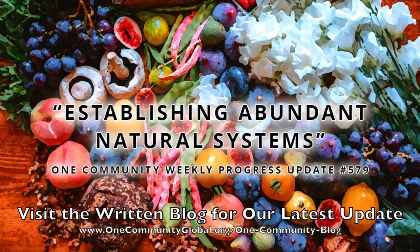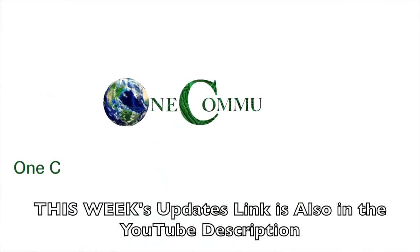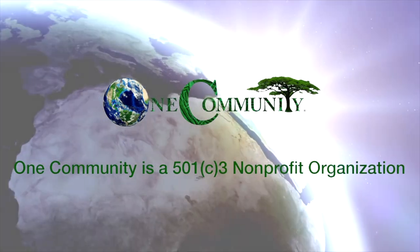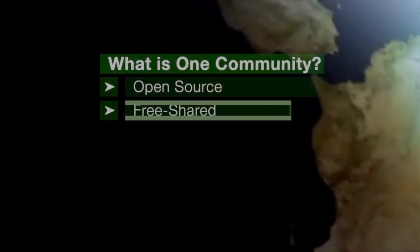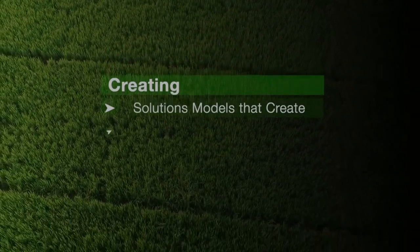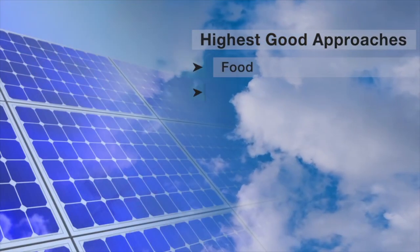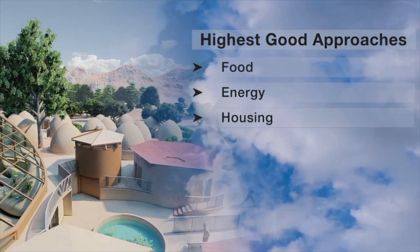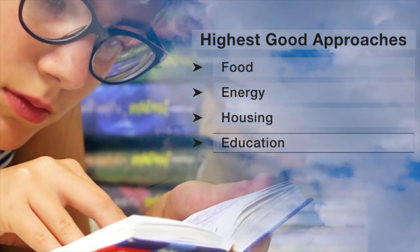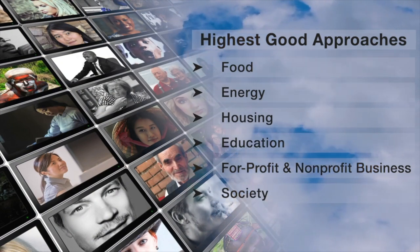Establishing abundant natural systems — One Community weekly progress update number 579. One Community is a 501c3 non-profit organization creating open source and free shared blueprints, resources, tools, tutorials, and do-it-yourself instructions for highest good living — creating solution models for food, energy, housing, education, for-profit and non-profit business creation, society, and true earth stewardship.